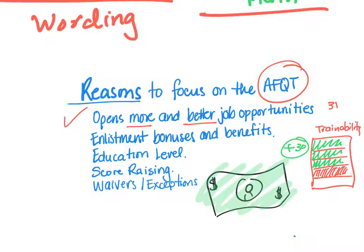Here's the one everybody loves: enlistment bonuses and benefits. Once they've determined your trainability is outstanding, they want you in because you're the kind of person they know they can invest in. Regarding education level, if you have a GED or another accredited high school program, having a high AFQT score ensures they won't give you issues — because normally a high school diploma is required to join the armed forces.